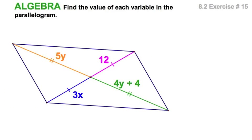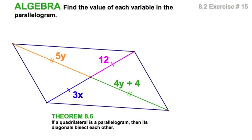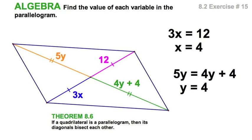Here we go with diagonals, color-coded to make it easier. Using our theorem 8.6, for x, let's set the blue equal to magenta. There you go. x is 4. This is pretty easy. Set green equal to orange, and y is 4. Well done.